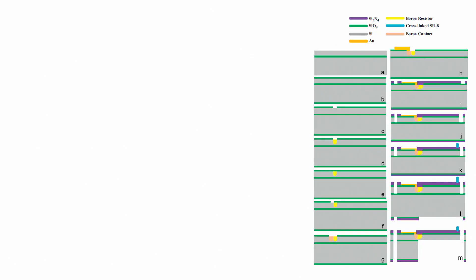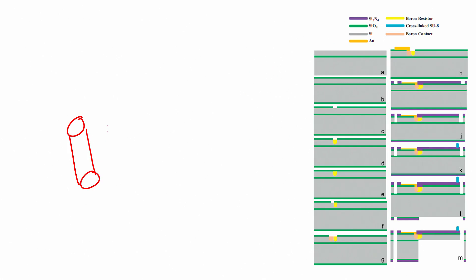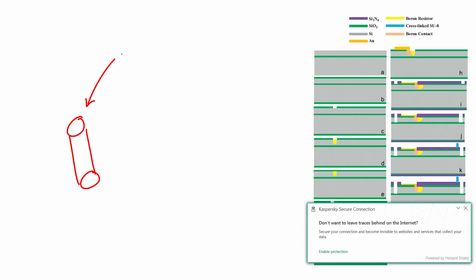If you see the screen, this is what we were talking about — in the last module we saw this process flow in detail. We have also seen that if we want to understand the properties of the tissue, when the tissue is taken out with a needle, that process is called biopsy — so it is called a biopsy needle.